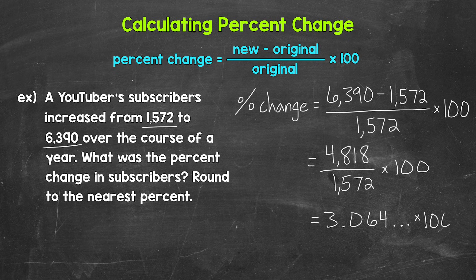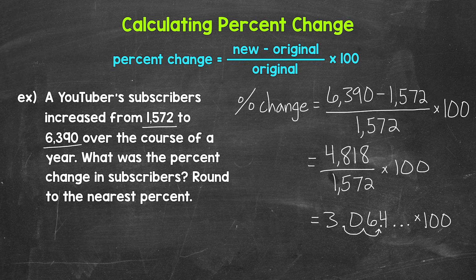Now we need to multiply that decimal by 100 in order to convert it to a percent. So let's multiply by 100 by moving the decimal once, twice to the right. That gives us 306.4, and that decimal continues on. So let's round this to the nearest percent. We do that by rounding to the ones place. We have a 6 in the ones place with the 4 to the right in the tenths. So does this round to 306 percent or 307 percent? Well, 306 percent.